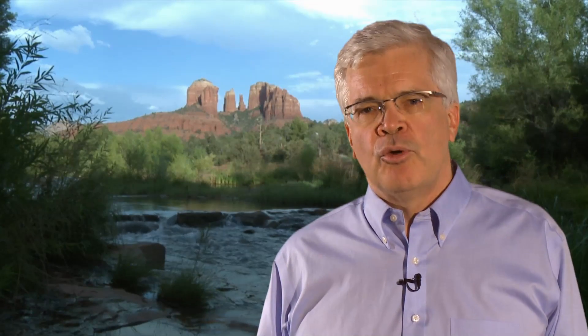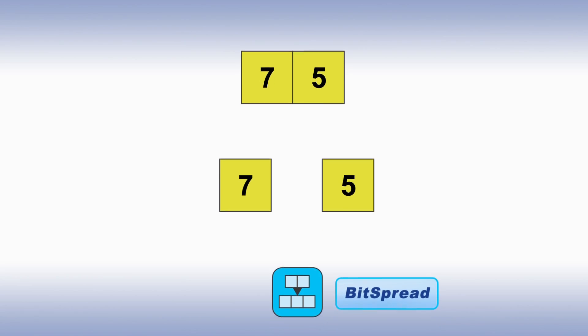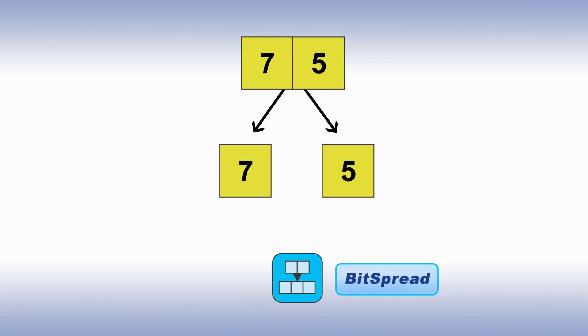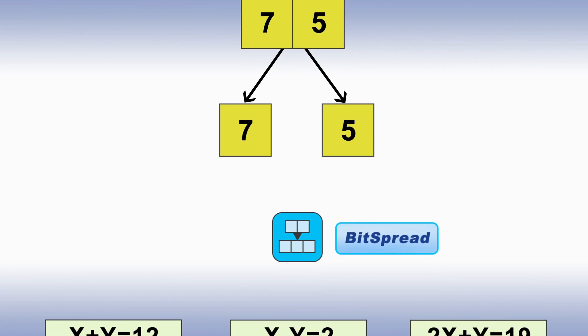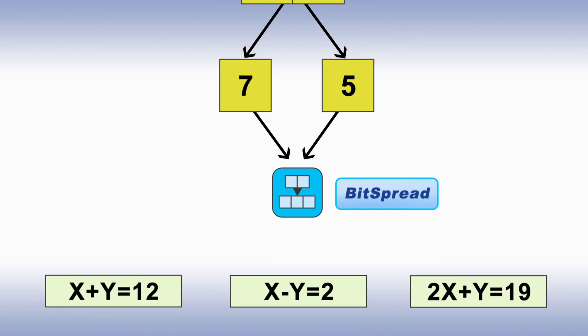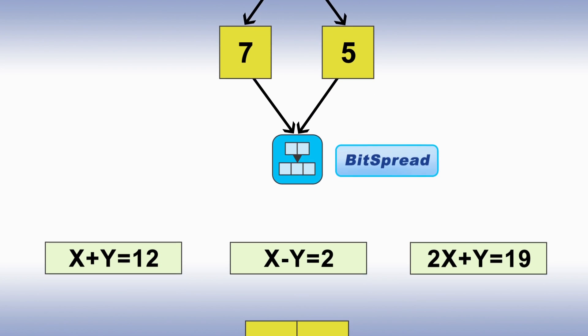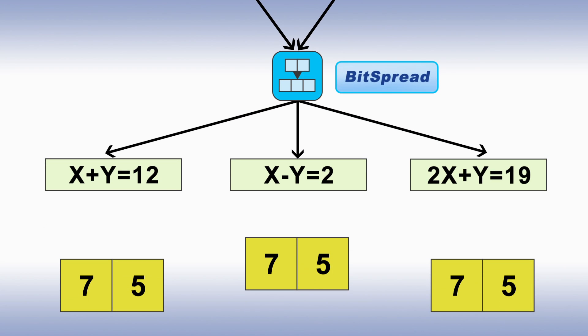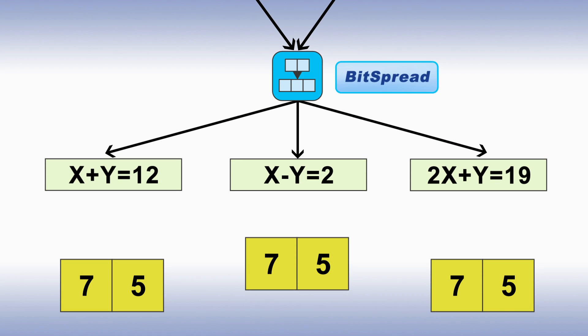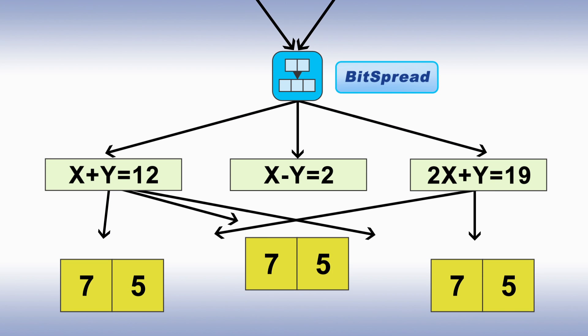The encoding process is key. Let's see how this works with a much simplified example. We'll split data into fragments 7 and 5, and send those to AmplaData's bit spread encoder. The encoder generates as many equations as needed for the desired redundancy — here, we can lose any one of the three fragments and still reconstruct the data.